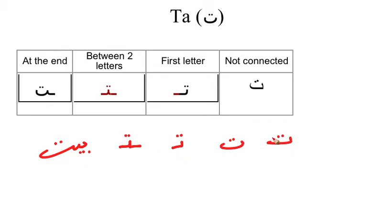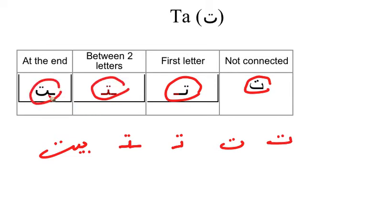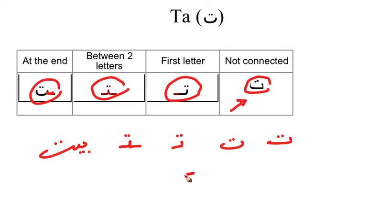So TA at the beginning as you see here, TA by itself, TA as a first letter, TA in between, and TA at the end. The small connecting piece before the TA at the end is just to connect — it doesn't matter what letter comes before it. At the end, all letters go back to the original shape, so keep that in mind so you won't be confused.